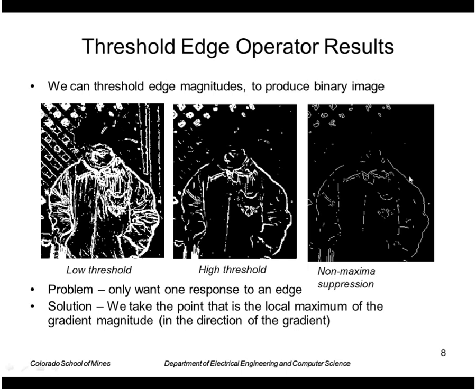So the typical approach to solving that is to take the local maximum or do non-maximal suppression. We take the gradient magnitudes and look perpendicular to the edge, namely along the gradient direction, and just take the point that is a local maximum in that direction. So that gives us a single pixel wide edge as shown here.